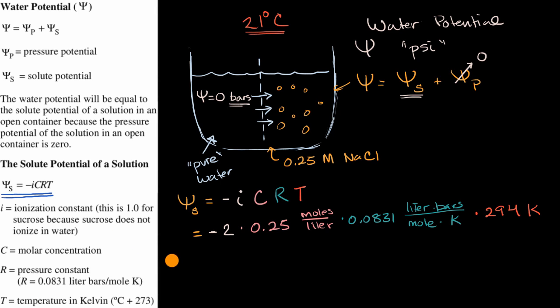And so this is going to be approximately equal to—we're going to have this negative out front—and if we look at our units, we have moles canceling with moles, liters canceling with liters, and then kelvin canceling with kelvin. So our units are going to be in bars, which makes sense, because that's what we already talked about, that's the units that we're dealing with here.